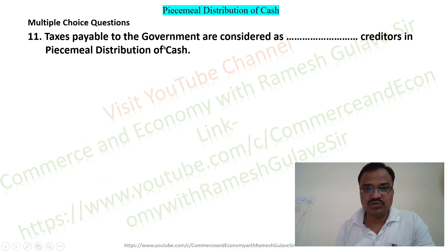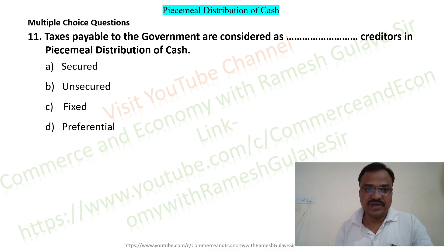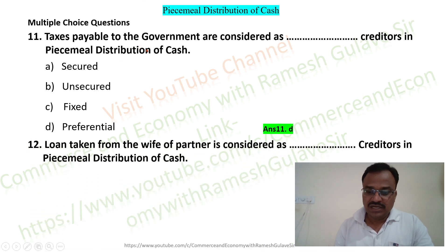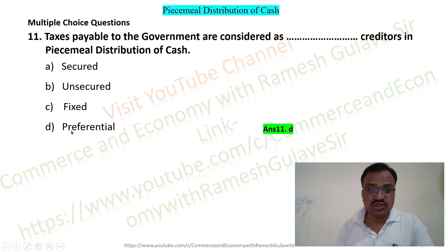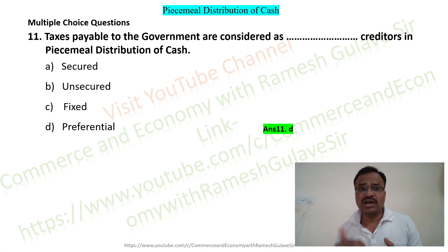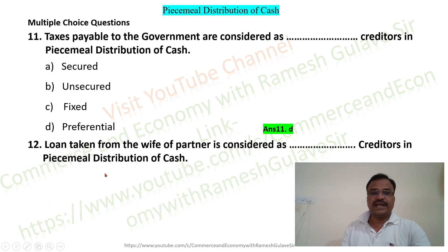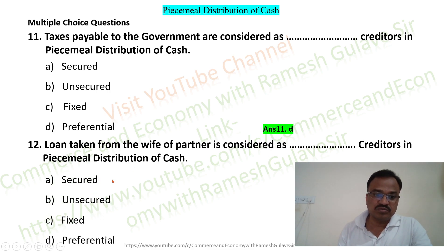Question 11: Taxes payable to the government are considered as dash creditors in piecemeal distribution of cash. Options are: secured, unsecured, fixed, preferential. Taxes payable to the government are considered as preferential creditors — all amounts due to the government are preferential creditors — so option D is the right answer.